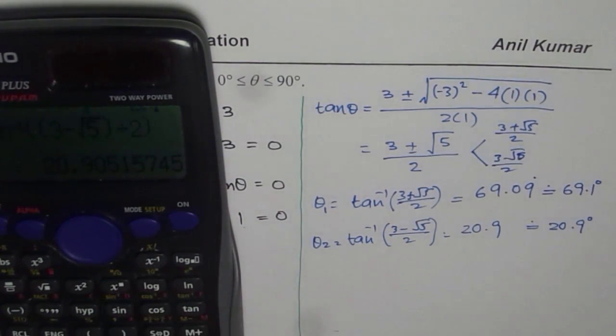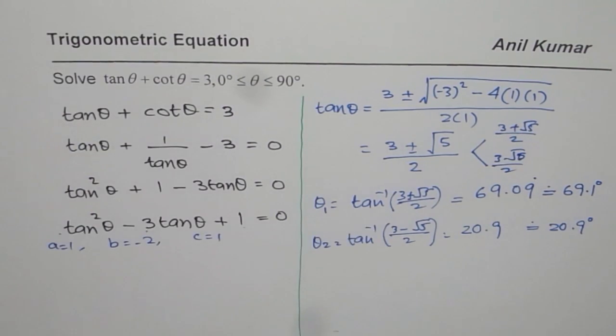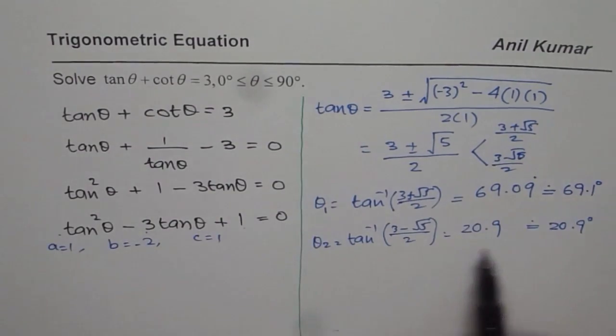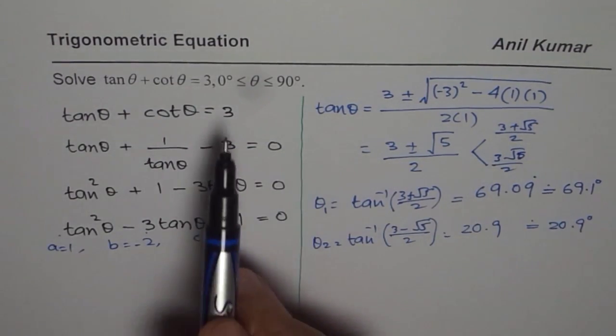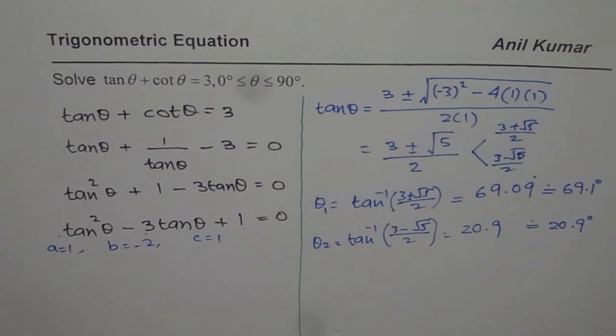You see how we have calculated this value? I like you to make a note of this so that you can properly use calculator and get the right answers. These are the two θ values which are within 0 to 90 degrees and they satisfy this equation.